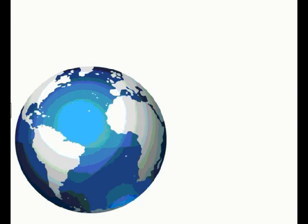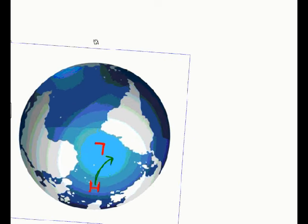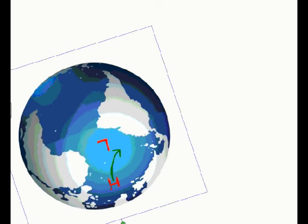Looking at a globe, if we place a high pressure here and a low pressure here, we'd assume the air moves from high to low — and it does — but it's going to curve to the right. You might look at the arrow and think it's going to the left, but you have to be the wind. We rotate the diagram so we're facing the direction the wind is moving, and then we can see it does curve to the right.